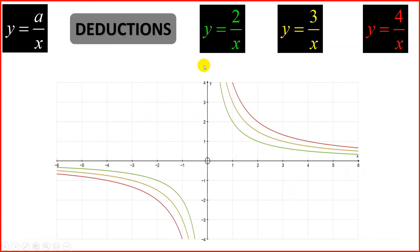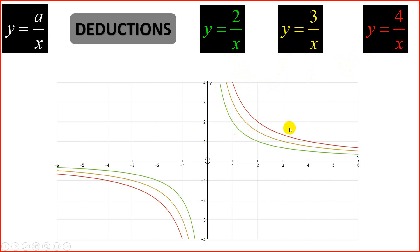We're going to make some quick deductions. You can practice drawing these graphs: y = 2/x, y = 3/x, and y = 4/x. Note, if you're trying to use factors, the factors for 2 would be 1 and 2, but we want 3 points. If you don't have 3 factors, you can use 1, 2, and the next multiple — so 1, 2, 4 is a good choice. For 3, you could use 1, 3, and 6. Looking at these three graphs — the green is 2/x, the yellow is 3/x, and the next is 4/x — we want to see how a affects the graph.